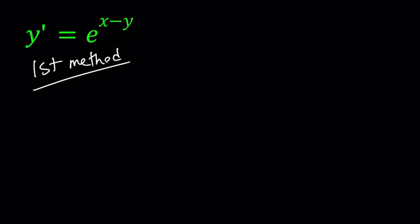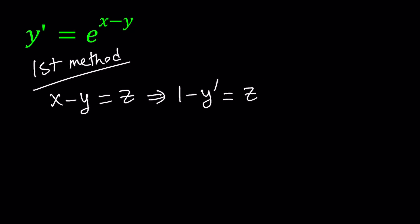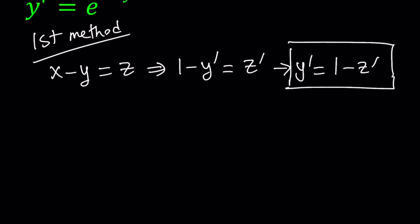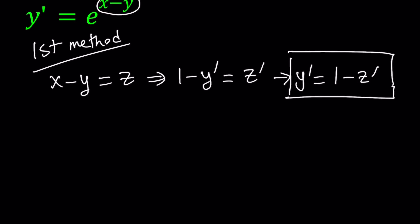Substitution is a really good method. So let's go ahead and call x minus y, z. And z is going to be a function of x because y is a function of x. So from here if you differentiate both sides we get 1 minus y prime, which is dy over dx, equals z prime, which is dz over dx.